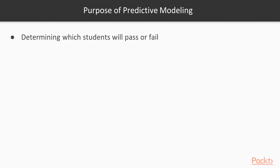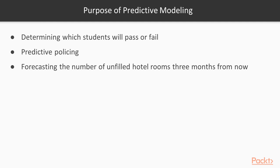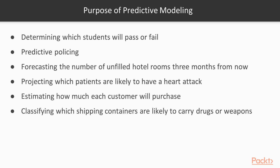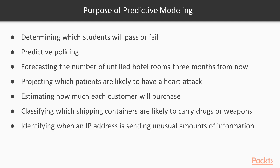The predictions can come in the form of equations, rules, or algorithms. Examples of predictive modeling include: determining which students will pass or fail a class, predictive policing to deploy officers before crimes happen, forecasting unfilled hotel rooms three months out, projecting which patients are likely to have a heart attack, estimating customer purchases, classifying shipping containers likely to carry drugs or weapons, and identifying when an IP address is sending unusual amounts of information.